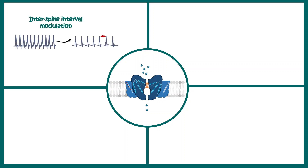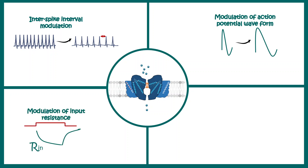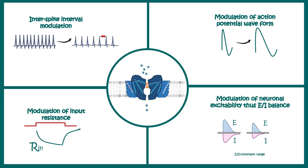Voltage-sensitive potassium channels can modulate the inter-spike interval, the waveform of the action potential, input resistance, and the overall excitatory-inhibitory balance in a neuronal circuit. So in terms of physiology, modulation of voltage-gated potassium channels means a lot.